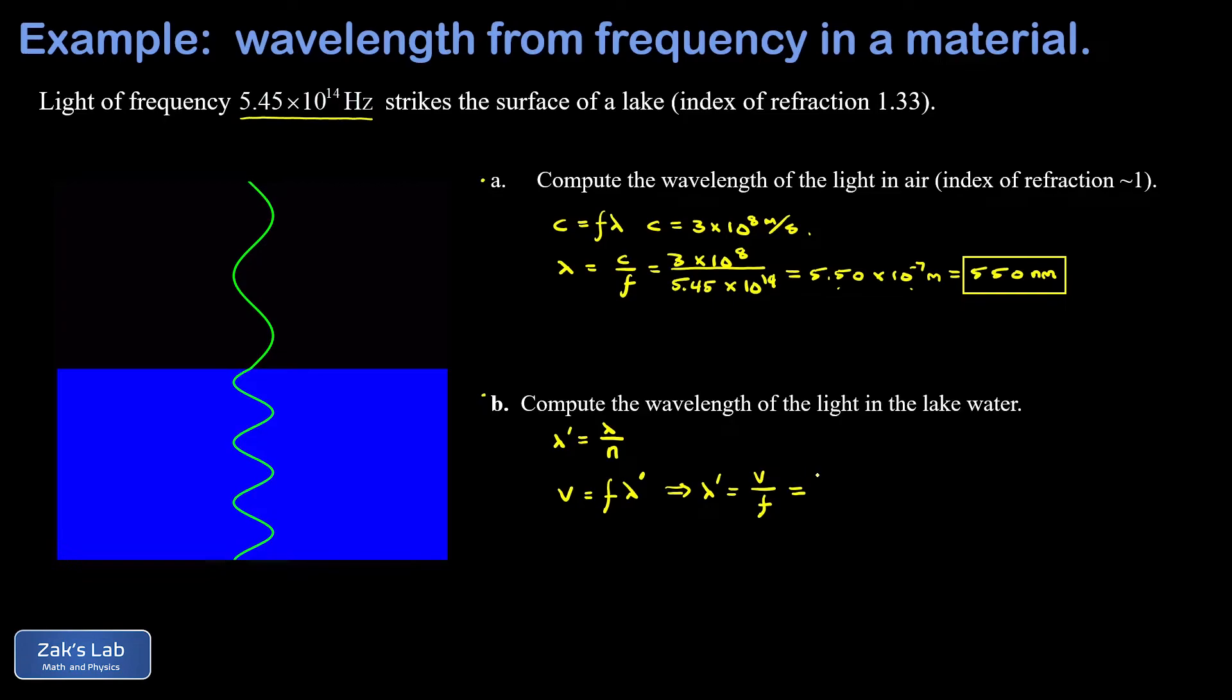So I end up with c over n f. But c over f is just the wavelength in a vacuum, so I end up with lambda over n. Whether you memorize it or re-derive it, lambda prime is lambda over n.